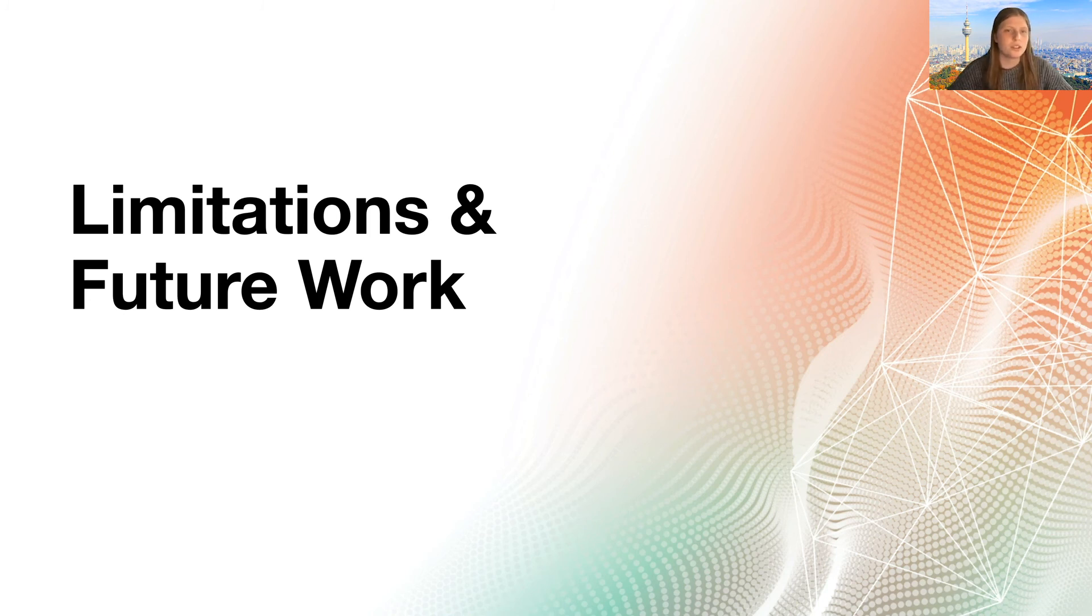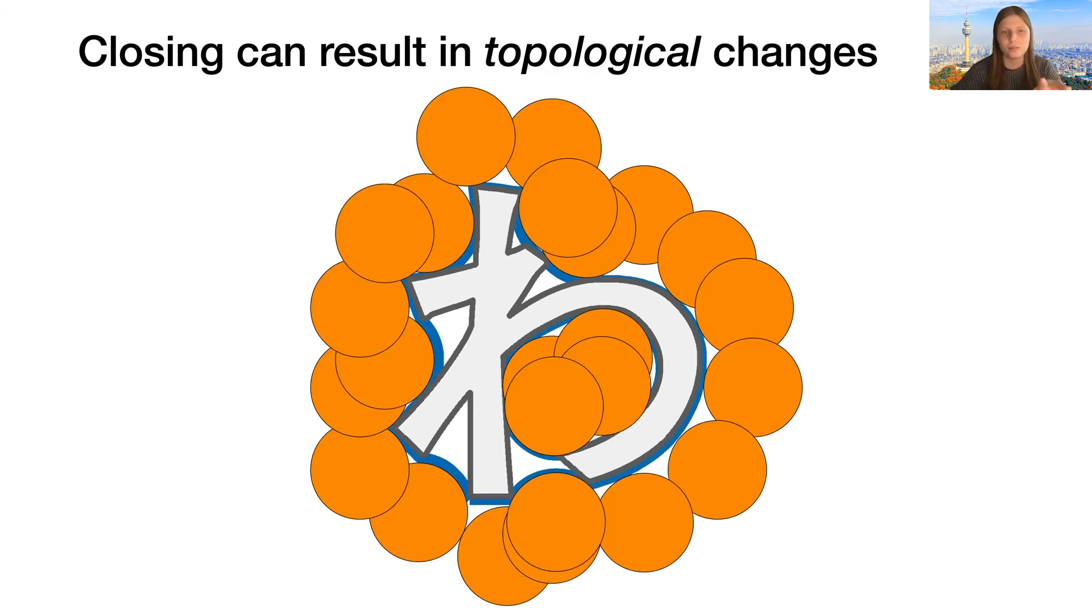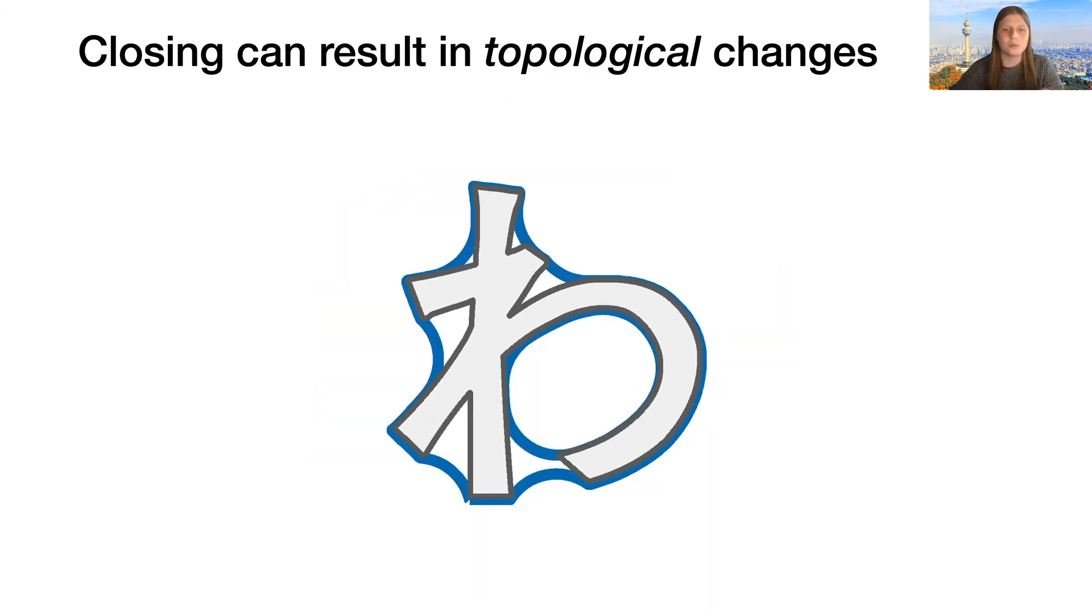Which is a nice transition into talking about the possible future improvements of our method. And to do this, I need to come clean with something. I told you that our flow perfectly replicates the closing, and this is not 100% true. This is because sometimes the closing can create topological changes in the input. For example, imagine I have this input shape, and let's try and cram these disks all around it, like this. Now this is what the closing will look like. Note how there is a bridge between two previously non-connected parts of the shape, and what was previously a genus 0 surface now has one topological hole. Intuitively, this is because there was a thin gap in which none of our disks fit.